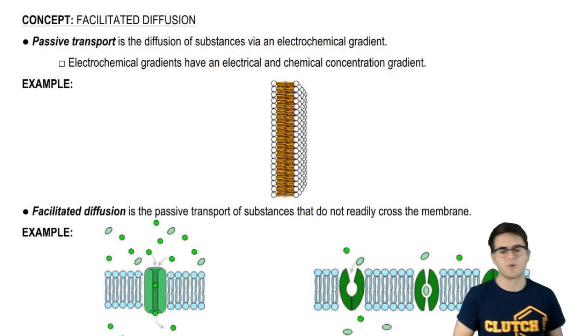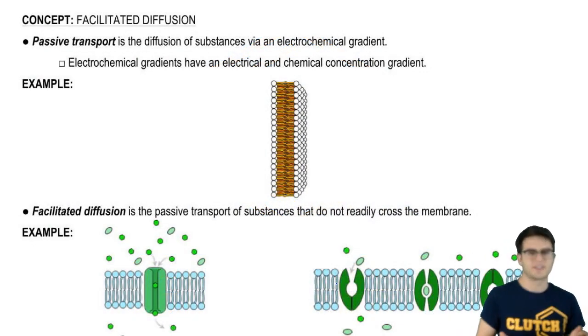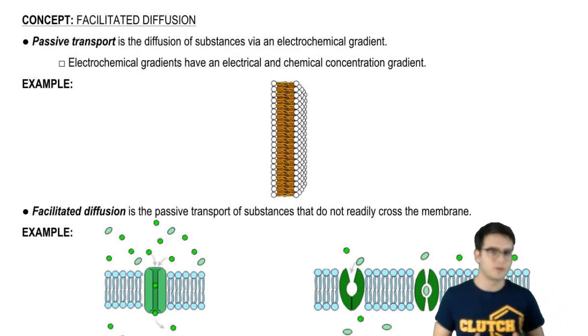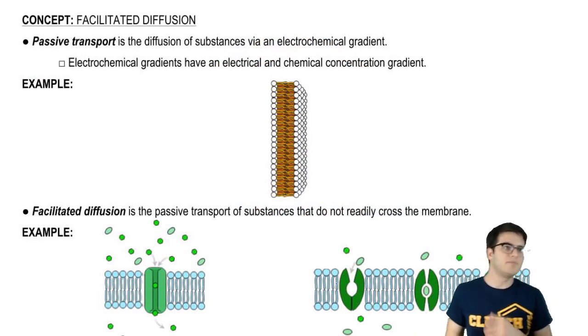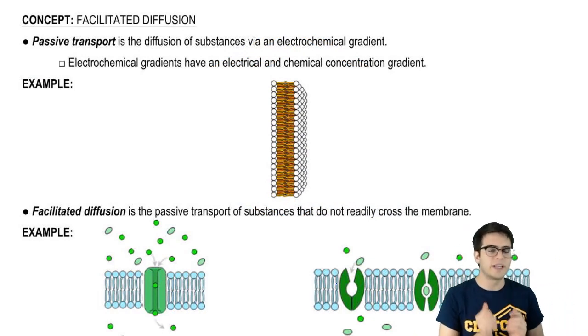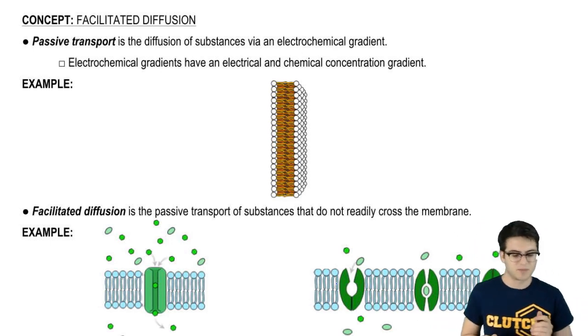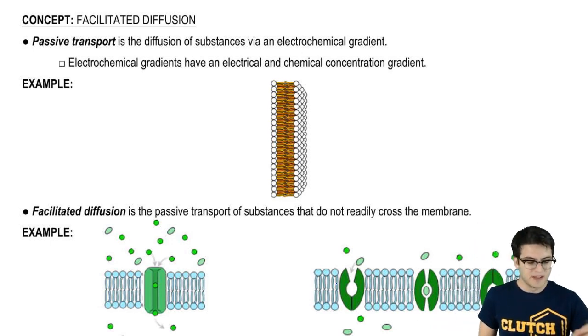Now passive transport is the diffusion of substances via an electrochemical gradient. We've already spent a lot of time looking at and talking about this process. Remember that electrochemical gradients have electrical and chemical components.